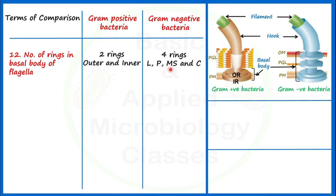In gram negative bacteria, four rings are present: L ring, P ring, MS ring, and C ring. The L ring is present in the outer membrane — you can remember it by LPS: L for LPS. The P ring is present in the peptidoglycan layer. The MS ring — M stands for membrane — is present in the membrane. The C ring is present on the cytoplasmic side of the membrane. Note that in some older microbiology textbooks these rings were labeled as L, P, M, and S, but the current terminology uses outer ring, inner ring, L, P, MS, and C ring according to the latest updated versions.